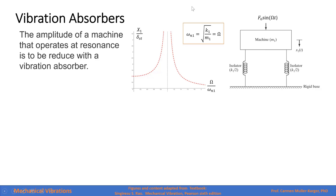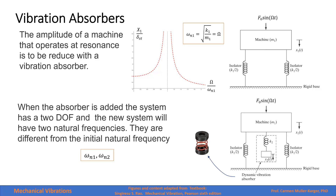This machine works in this range of frequency. As you recall, resonance means that the natural frequency of the machine — defined as the square root of the spring constant divided by the mass — is equal or very similar to the forcing frequency. When the absorber is added, the system has two degrees of freedom and the new system will have two natural frequencies.